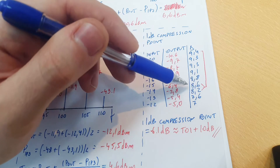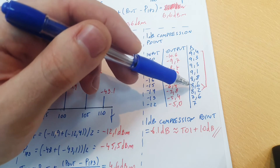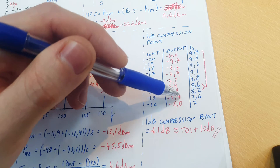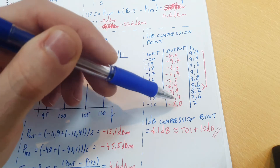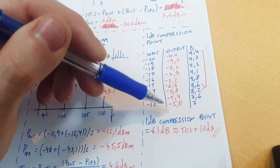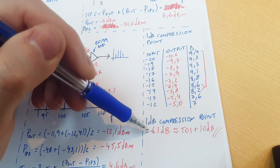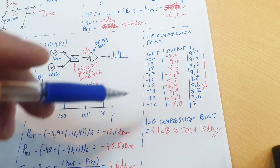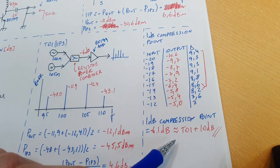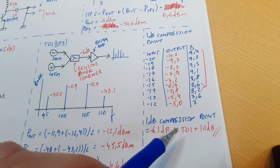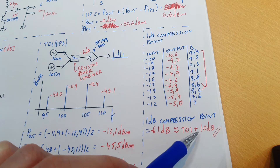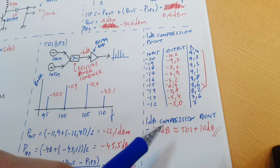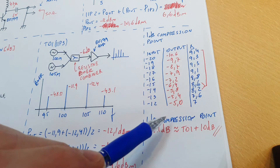Taking the mean of these two output power values, the 1dB compression point referred to the output of the amplifier is -6.1dB. We're going to see in the next video that this is very close to the third-order interception point plus 10dB, which is common behavior for linear amplifiers.